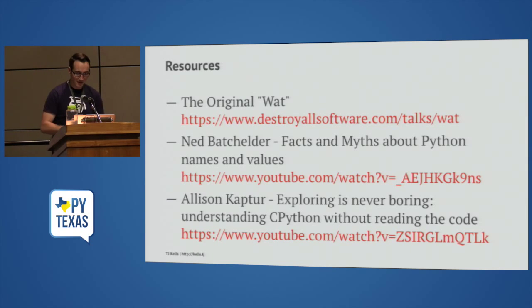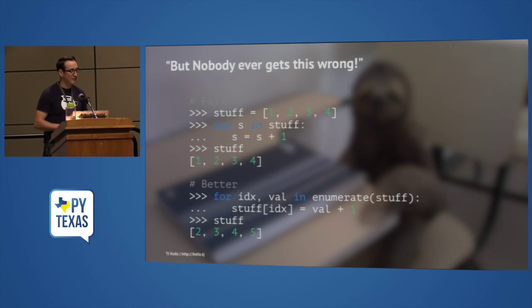Question from the audience: if you had a list of objects instead of values and you iterated over that, you would have a reference. Yes — good question. Thanks, guys.